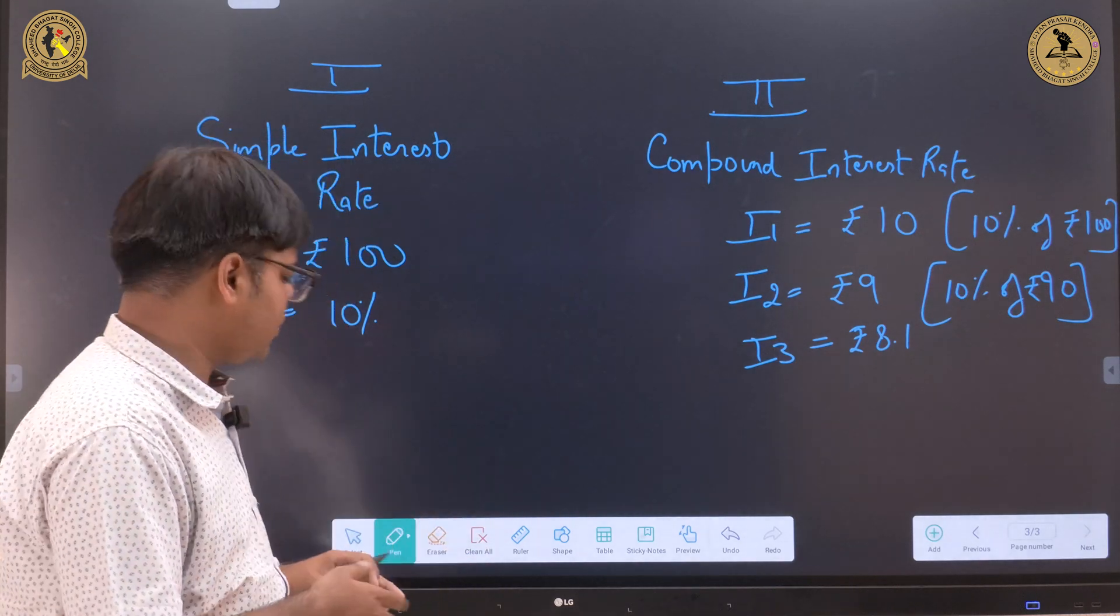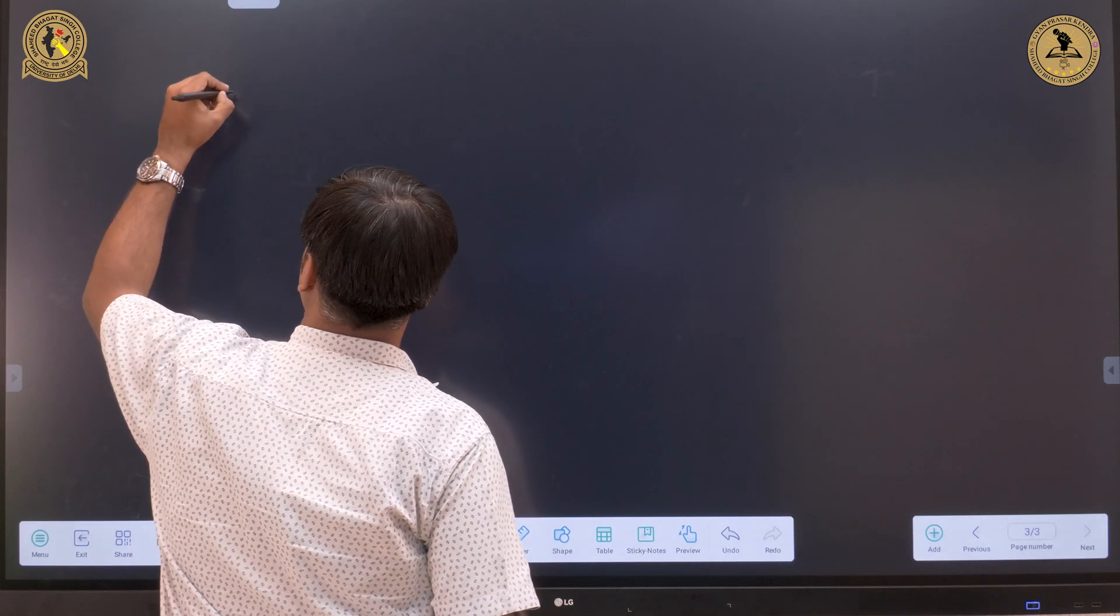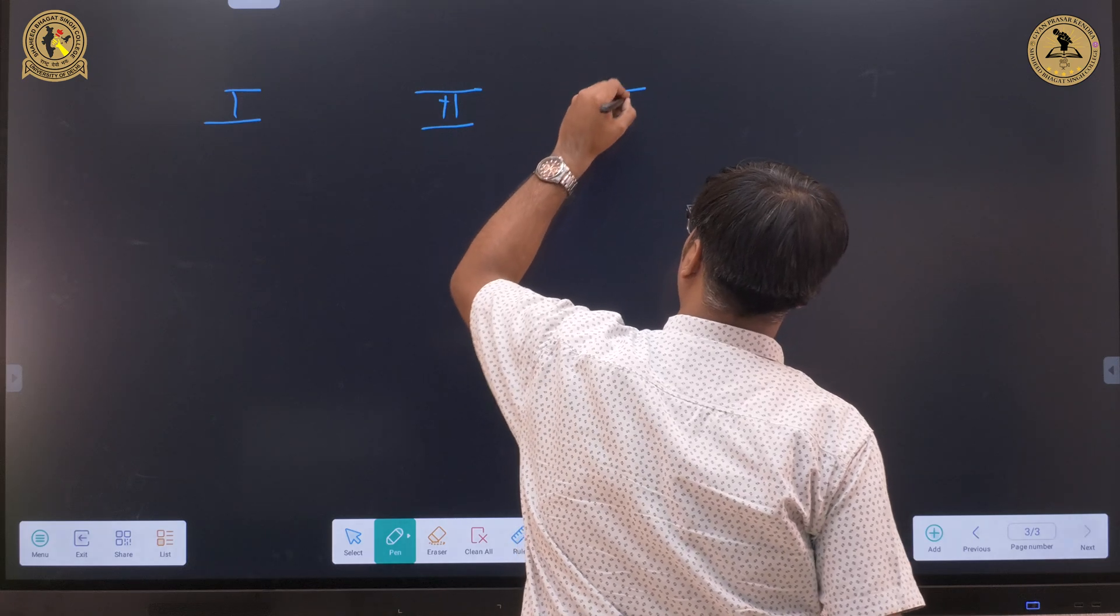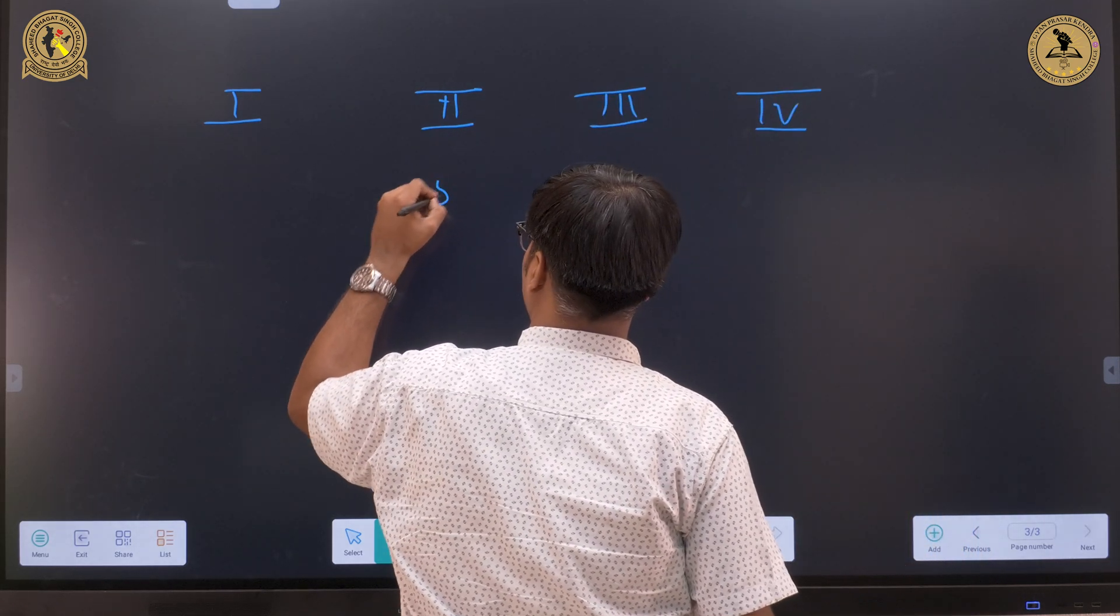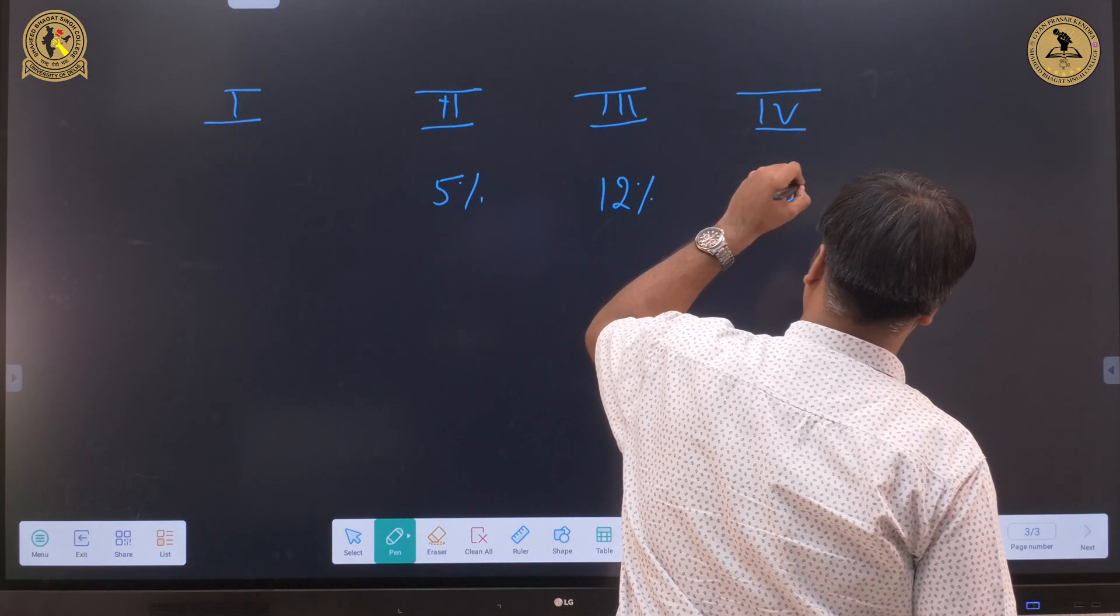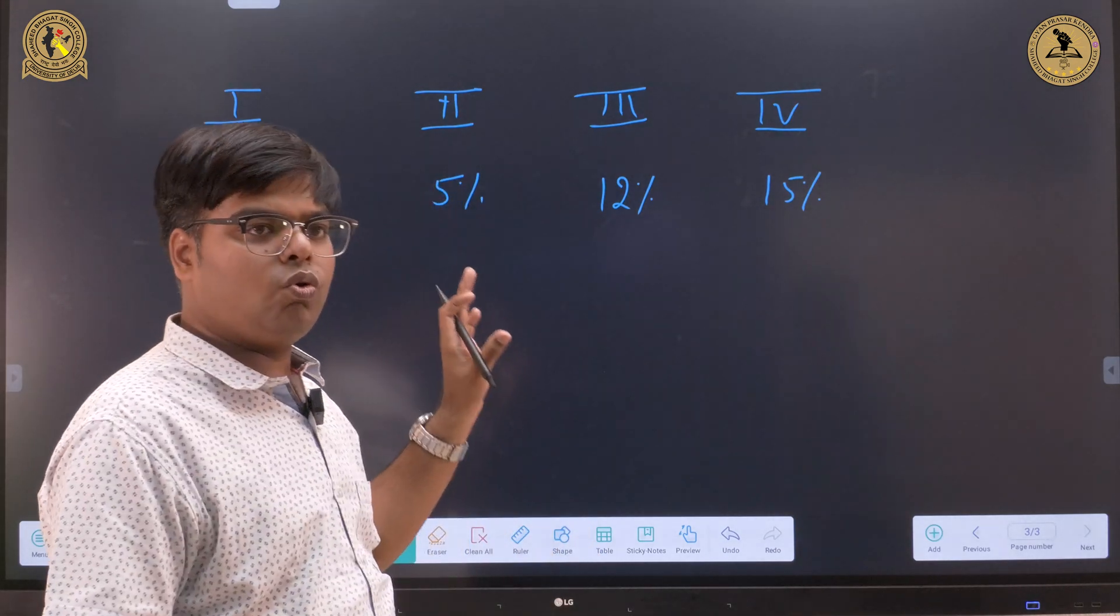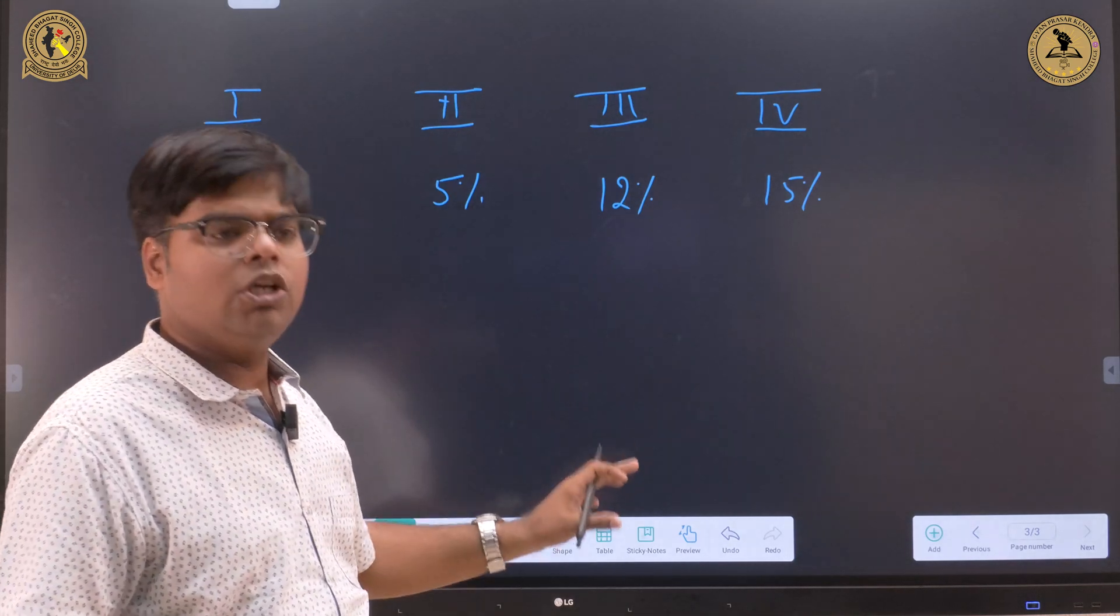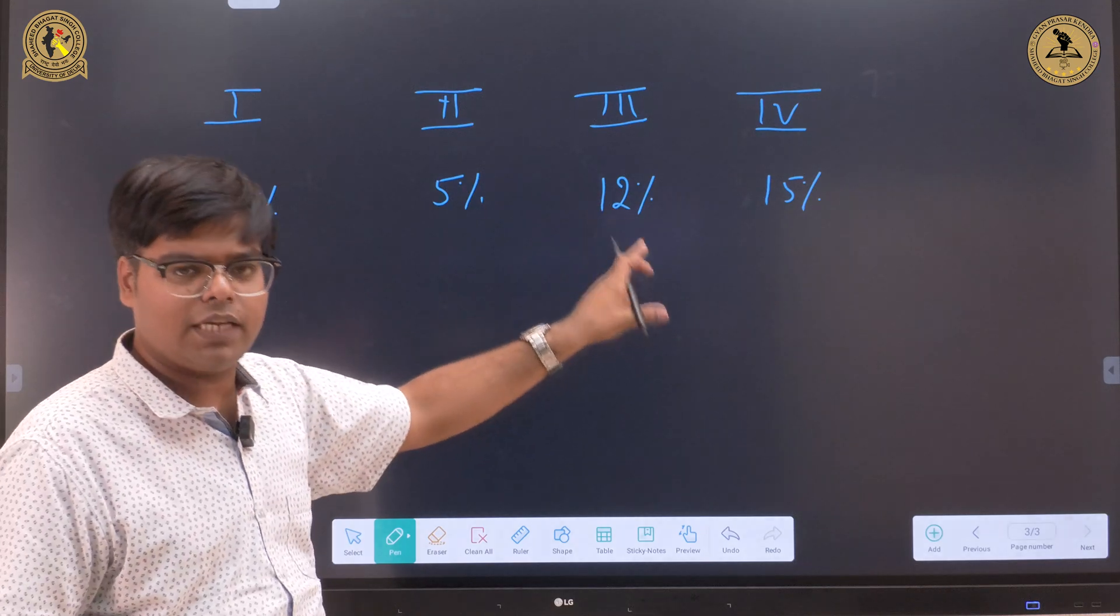Does it mean that we can't apply the rule of 72 if the interest rate is 2% or if the interest rate is 15%? The answer is yes, yes we can apply. Let us take one example.